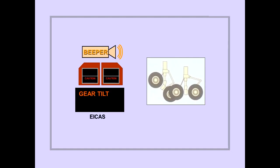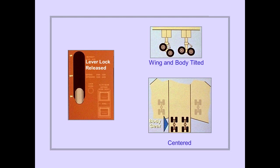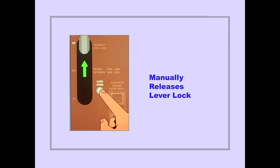The ICAS caution message gear tilt is displayed after takeoff when one or more wing or body gear are not tilted. When a wing or body gear is not tilted, gear retraction will cause wheel well damage. Recall that the landing gear lever lock releases when the body and wing gear are tilted and the body gear are centered. If the lever lock fails to release, pushing the lock override manually releases the lever lock.